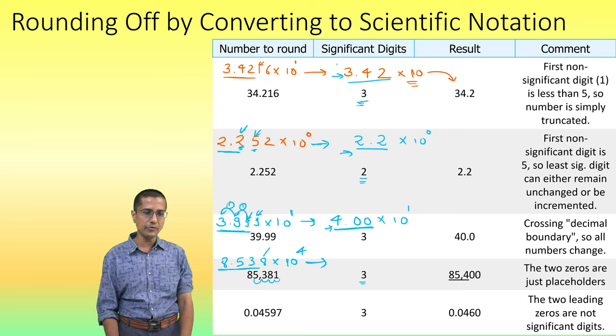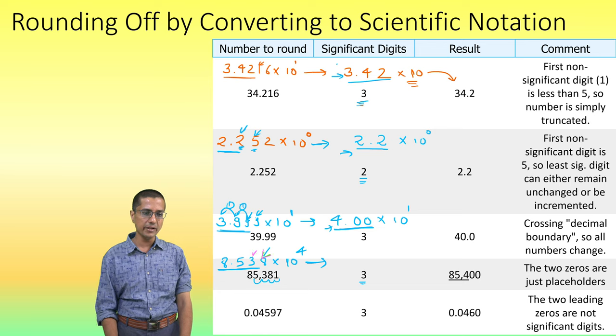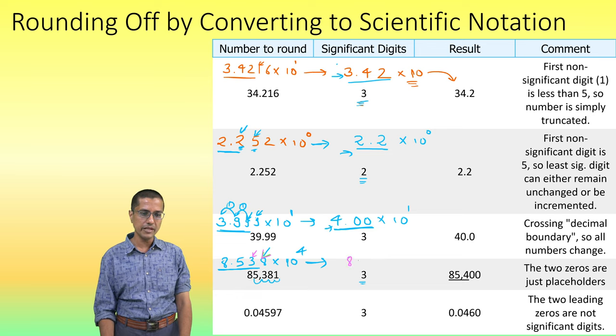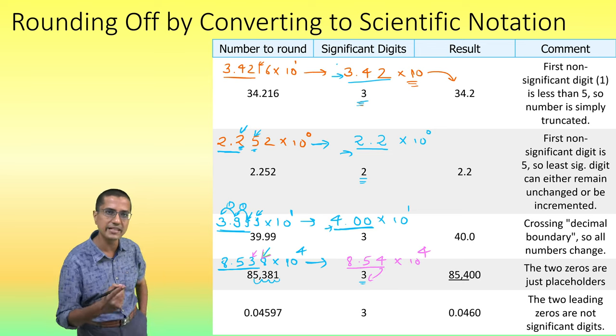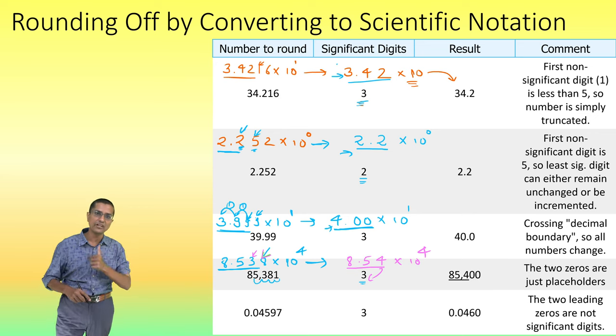So, I look at the first digit I am throwing off. Because it is an 8, this one, this digit is an 8. So, what I need to do, I need to increment this one. So, this becomes 8.54 × 10⁴. Notice that I have 3 digits here, which is the 3 significant digits that I needed after rounding has happened.